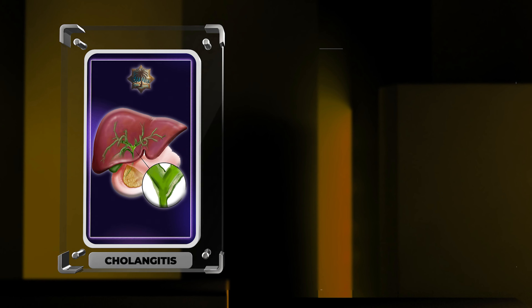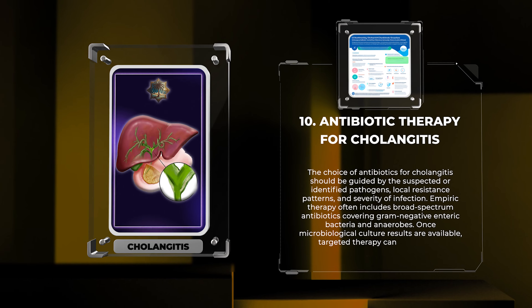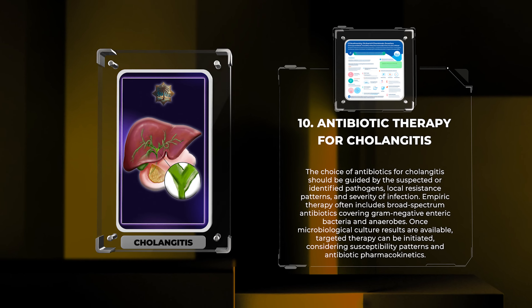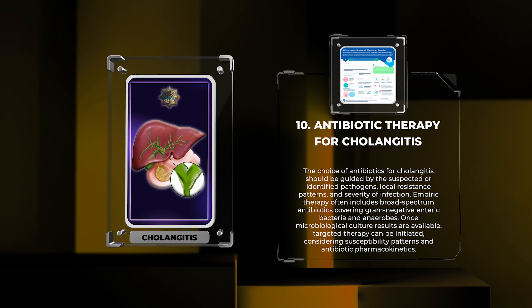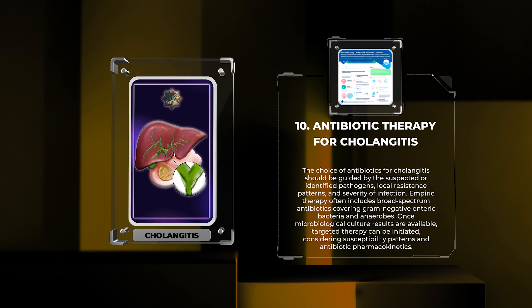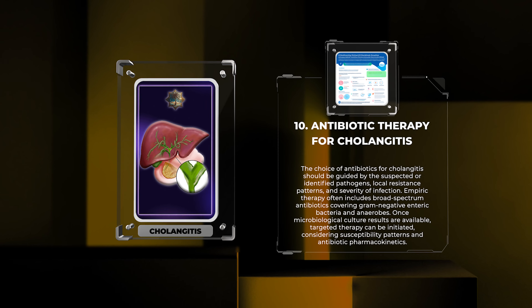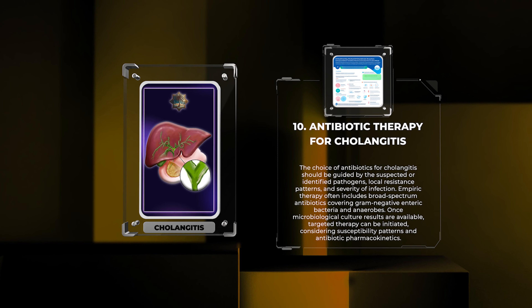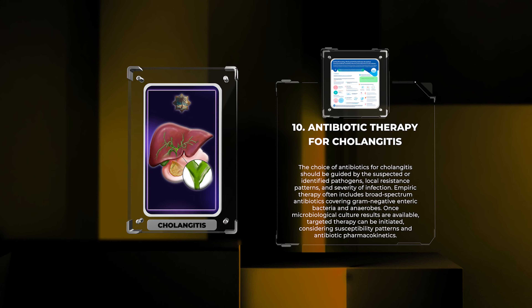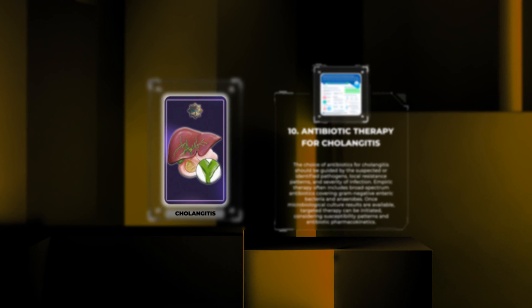The choice of antibiotics for cholangitis should be guided by the suspected or identified pathogens, local resistance patterns, and severity of infection. Empiric therapy often includes broad-spectrum antibiotics covering gram-negative enteric bacteria and anaerobes. Once microbiological culture results are available, targeted therapy can be initiated, considering susceptibility patterns and antibiotic pharmacokinetics.